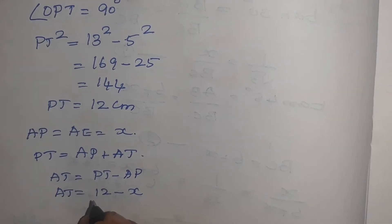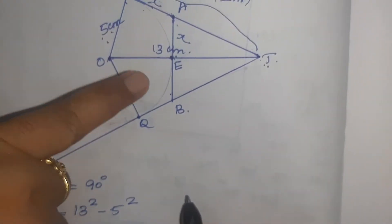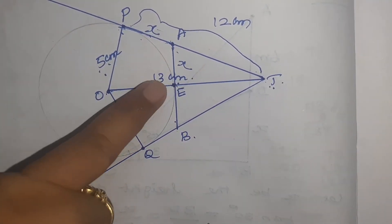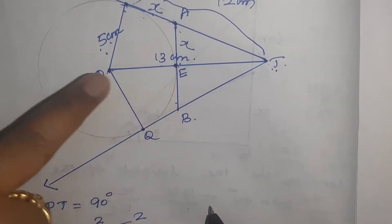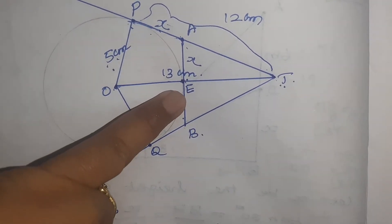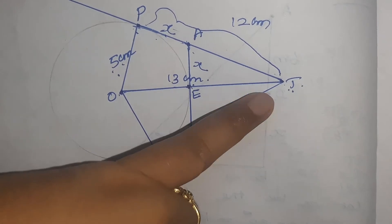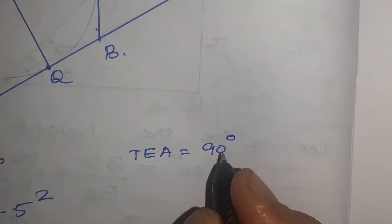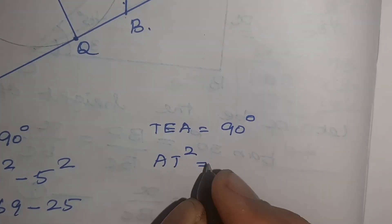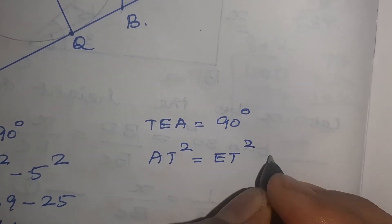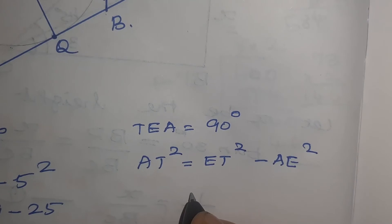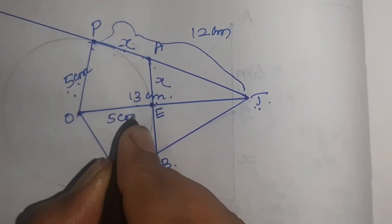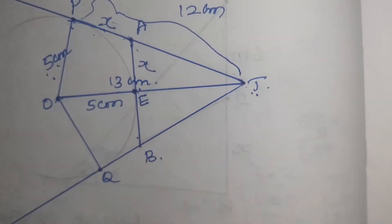Here we are going to find AE. To find AE, angle OEA equal to 90 degree, because AB is tangent and AB is perpendicular to OE. Therefore, angle TEA equal to 90 degree. Again applying Pythagorean theorem: AT square equal to ET square plus AE square. ET square equals — total distance is 13 centimetre and radius is 5 centimetre. So 13 minus 5, ET equal to 8 centimetre.